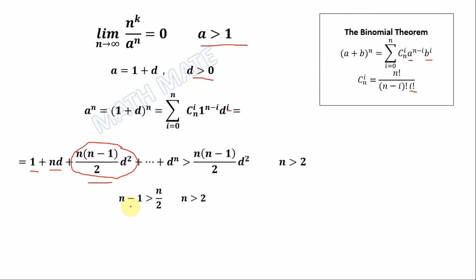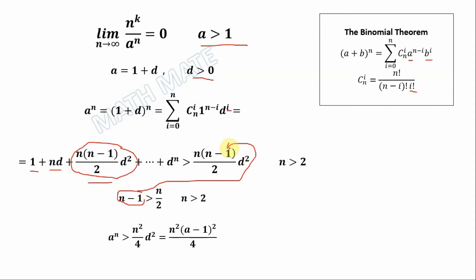It is obvious that n minus 1 is more than n divided by 2 for all n more than 2. We can check it by putting any value of n more than 2. In the next step, we plug in n over 2 instead of this term, and we have this value is still more.